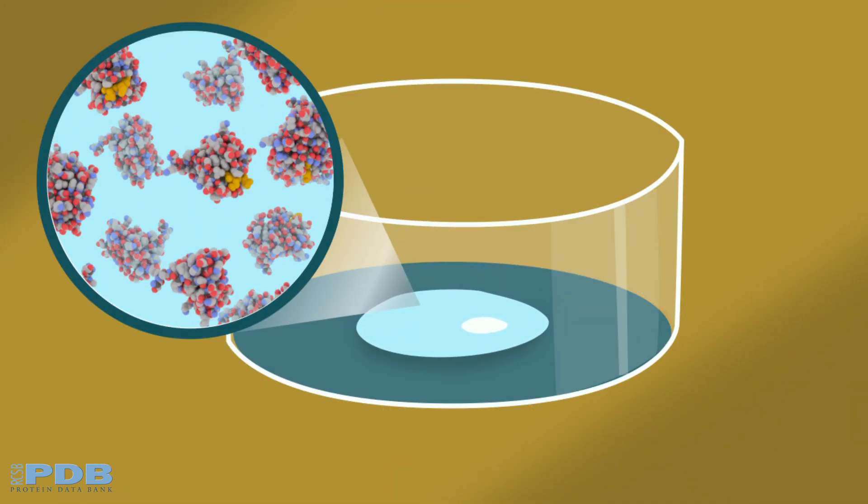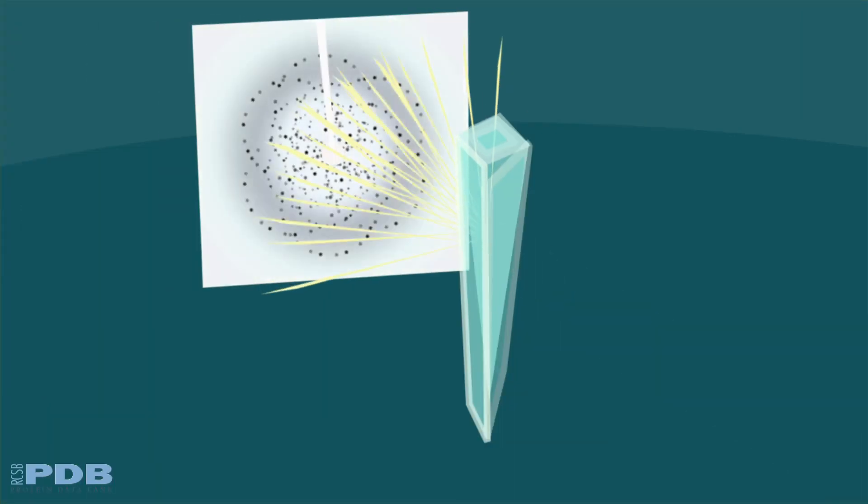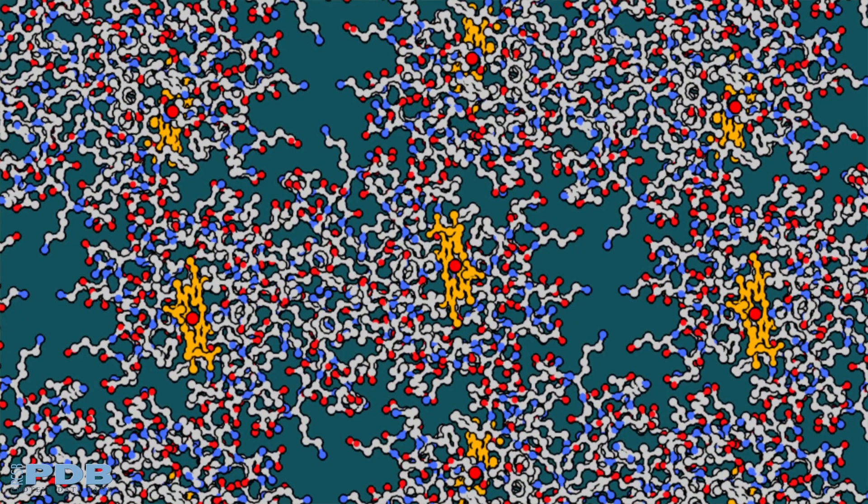Proteins form crystals when they are purified and concentrated. Within the crystal, many copies of the protein are arranged in symmetrical arrays. When an X-ray beam strikes the crystal, the X-rays scatter into a distinctive pattern of spots. These X-ray diffraction patterns are then analyzed to determine the positions of atoms in the protein.